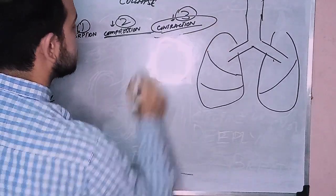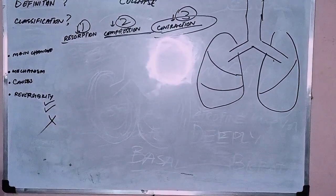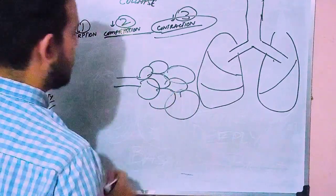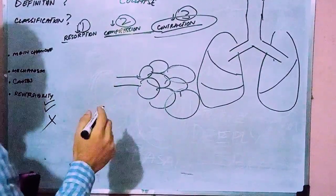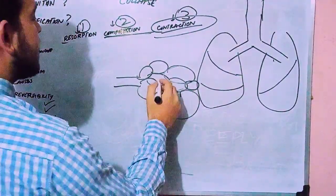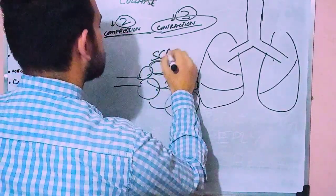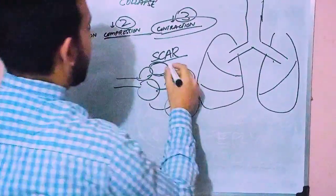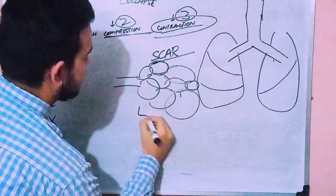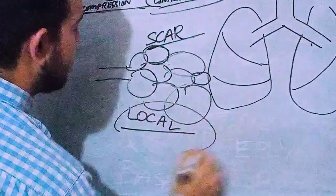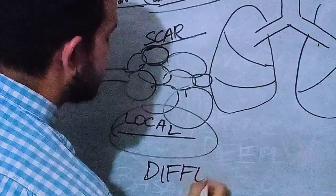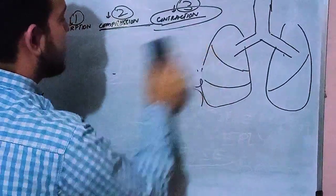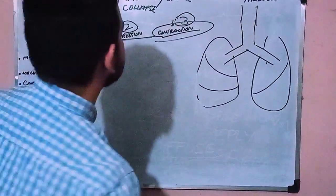The last and most notorious type is contraction atelectasis, and the most important thing about it is that it is not reversible. In contraction atelectasis, the alveoli are fibrosed — there is scar tissue formation and fibrosis — which causes inability of the lungs to expand. This scarring can be either local or diffuse. If it's local, the patient can still breathe, but if it's diffuse, the patient cannot breathe at all. It occurs in diseases like tuberculosis.